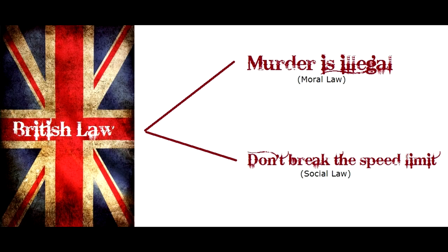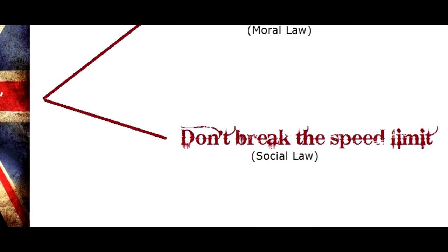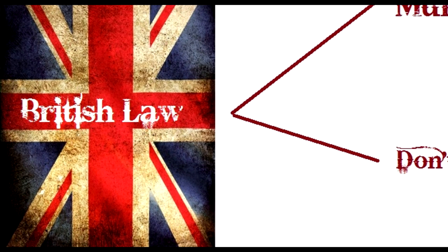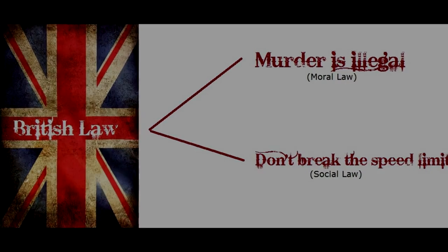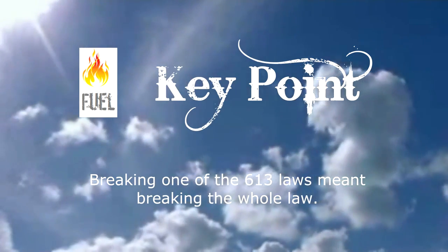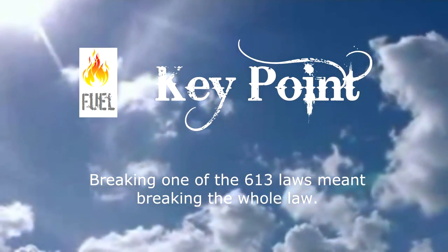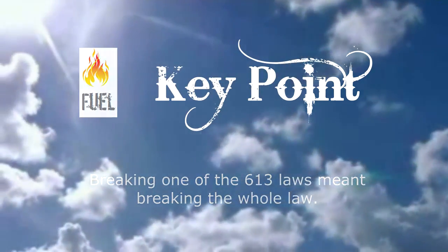Our civil law works in the same way. The British government says that murder is illegal — that's a moral law. But the British government also says not to break the speed limit, and that's not a moral law, it's a social one. It's not any more immoral to drive at 51 miles per hour than it is at 50. But whether someone murders or breaks the speed limit, we use the same expression for both — we say that they have broken the law, singular. The same authority, namely the British government, has been offended by each transgression. It's the same with the Law of Moses. Whichever one of the 613 you broke, whether it be moral, ceremonial, or social, it was an offence to the same authority — God. And because of his holiness, God punishes all sin the same way: by death.